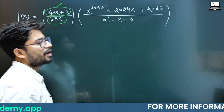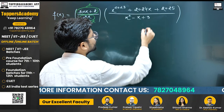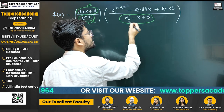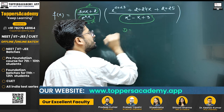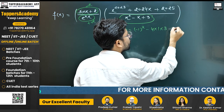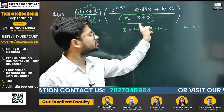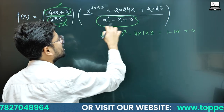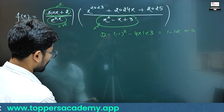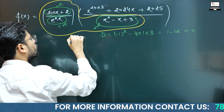Similarly, e^(πx) is also greater than 0, so that is also a positive quantity. Now if you observe x² - x + 3, this is a quadratic whose leading coefficient is 1, and the discriminant b² - 4ac equals 1 minus 12, which is negative. So a is positive and D is negative, meaning that quadratic is always positive for every x in R. So in f(x), this expression is always positive.